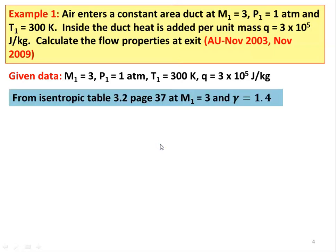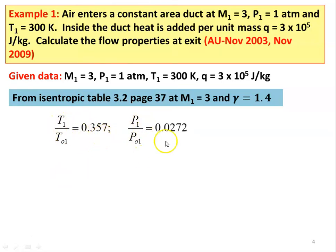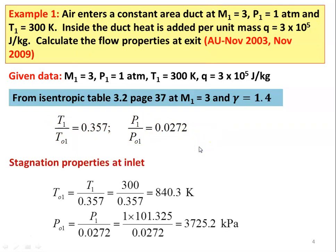From isentropic table 3.2, page number 37, at Mach number M1 equal to 3 and gamma equal to 1.4, we take T1/T01 equal to 0.357 and P1/P01 equal to 0.0272. We calculate the stagnation properties at the inlet: T01 equal to 300 divided by 0.357 equal to 840.3 Kelvin, and P01 equal to 1 × 101.325 divided by 0.0272 equal to 3725.2 kilopascal.